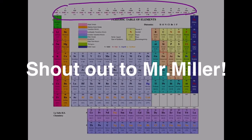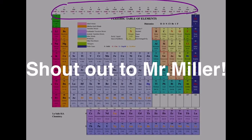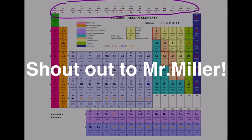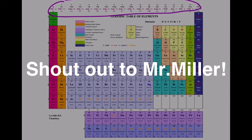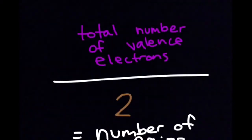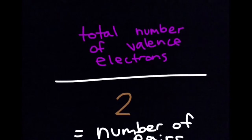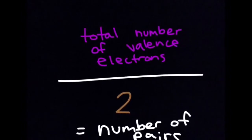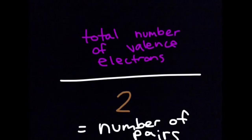...and he made this pretty cool periodic table of elements, and at the top it says how many valence electrons there are per element, which is actually very easy for us, thanks Mr. Miller. So once you find out how many valence electrons there are, you're going to divide that number by two, and therefore you will get your number of pairs.